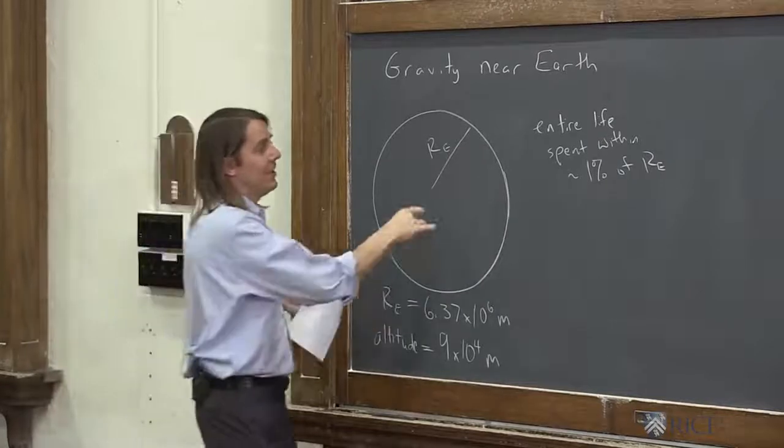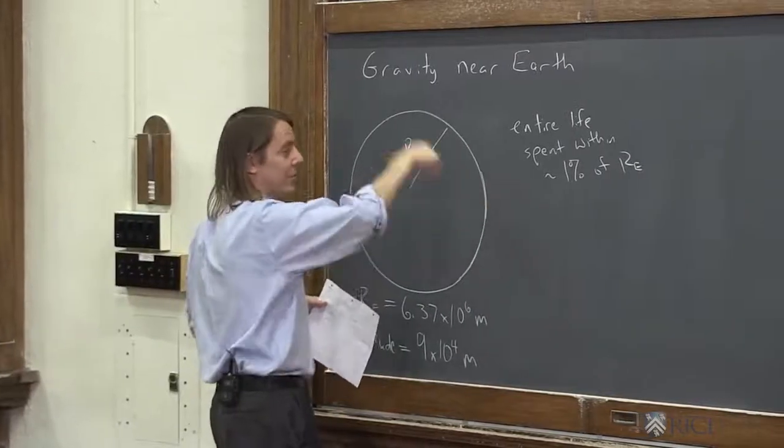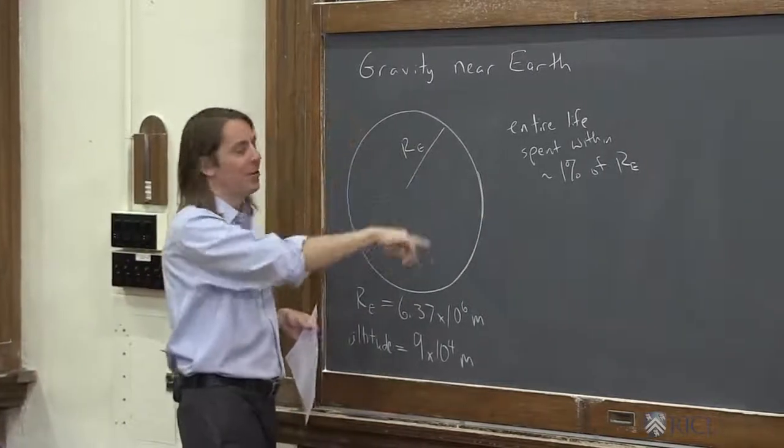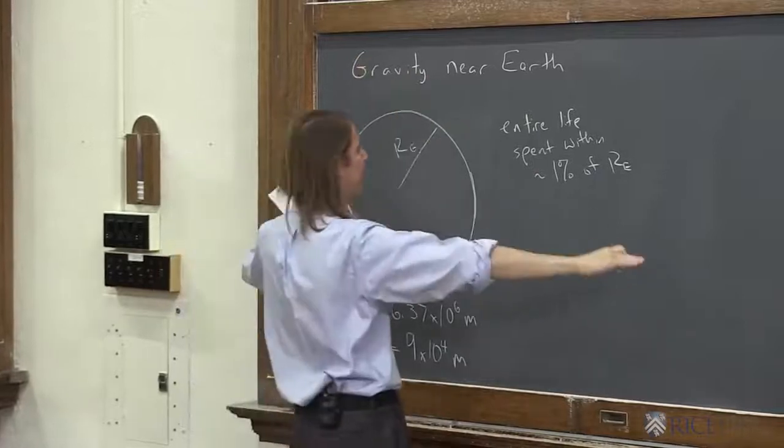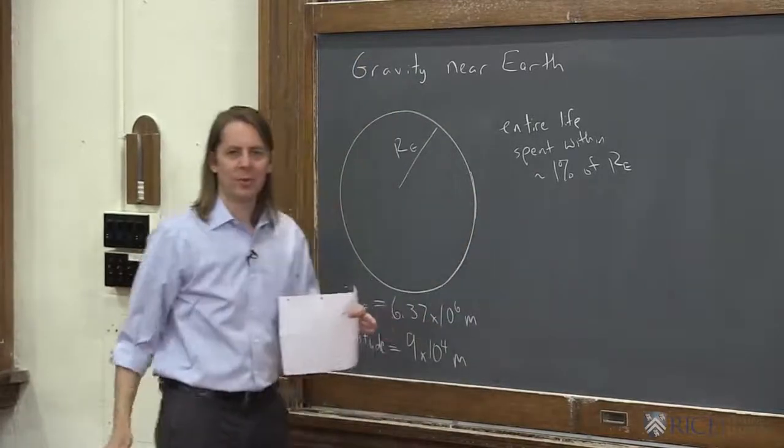So the basic idea is that you never experience a lot of the big fall-off, a lot of how the force varies with 1 over R squared. You're in such a small range you don't get to see all that.